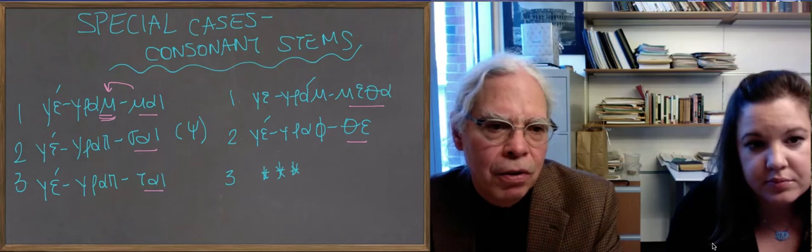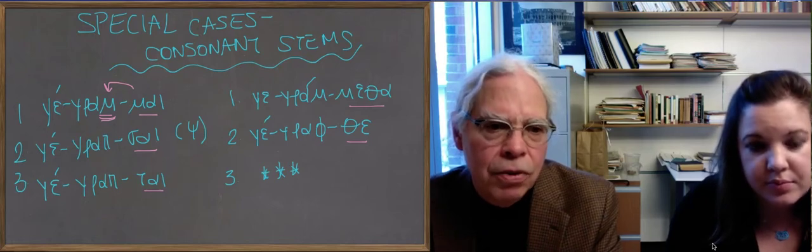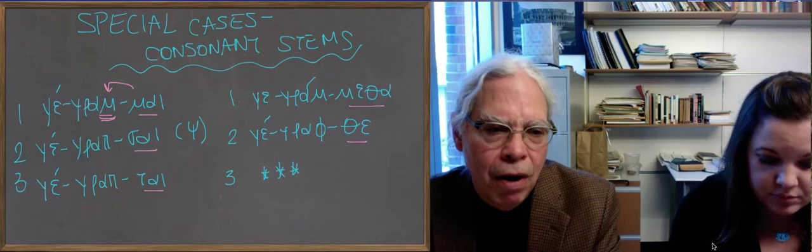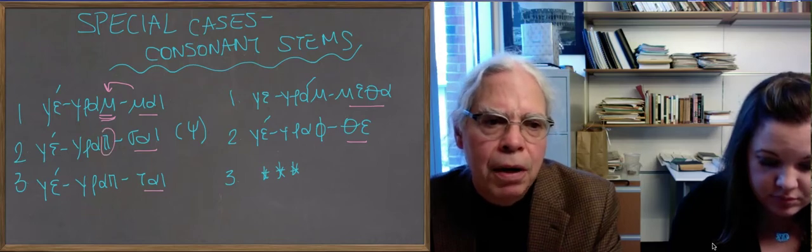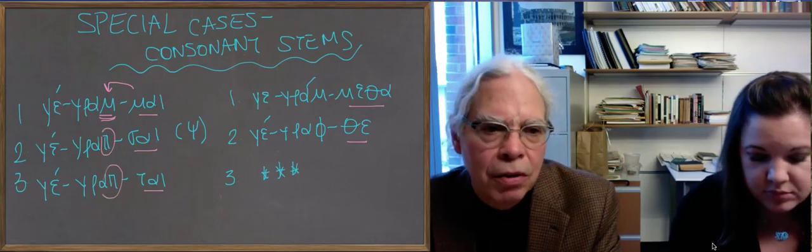It can turn into a pi before the s, or before the t. So graf becomes ge, grap. It becomes, it loses its aspiration.